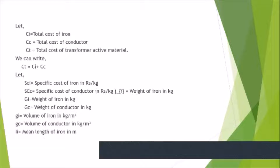Let CI be the total cost of iron, CC be the total cost of conductor, and CT be the total cost of transformer active material. So we can write CT is equal to CI plus CC.